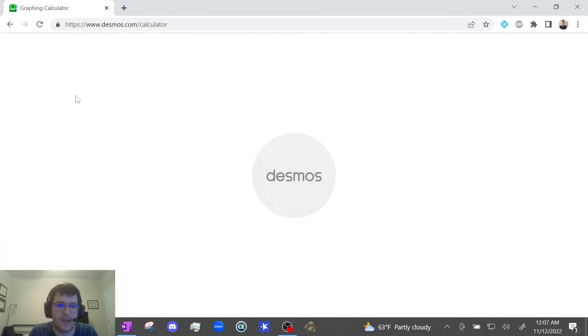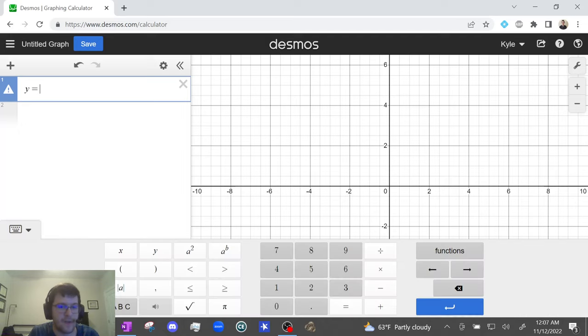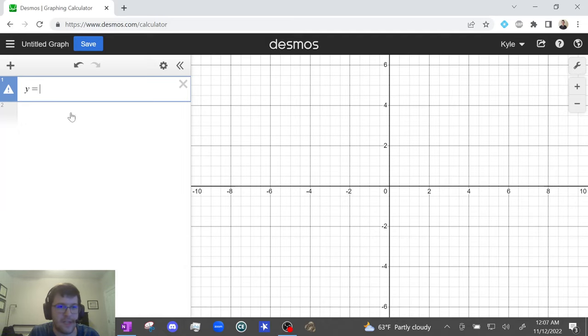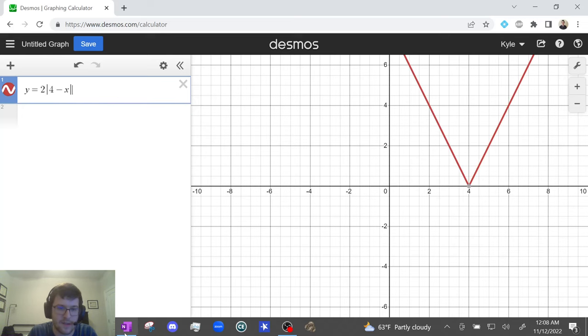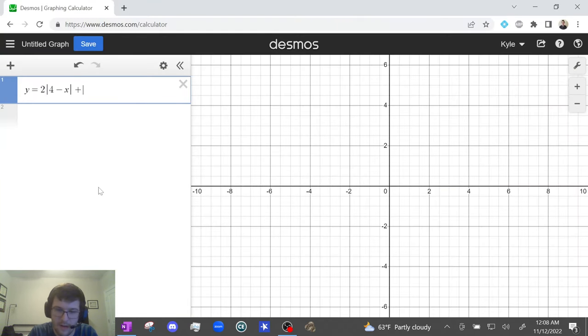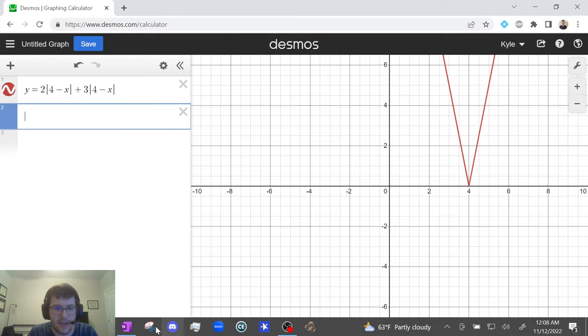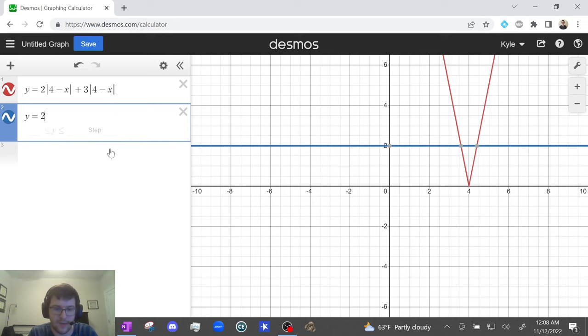And we're going to do y equals left-hand side. And the absolute value button is in the function menu. But what might be easier is if you hold shift and press the key above enter, which does a vertical line. So 2, absolute value 4 minus x, and then plus 3, and then vertical line, 4 minus x, vertical line. And then the other side is y equals 25. So we're going to do y equals 25.